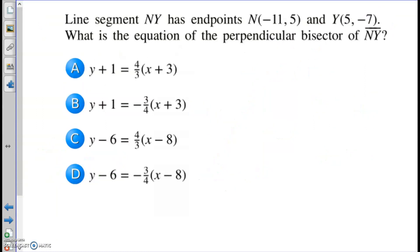Alright, let's do number 12. Line segment NY has endpoints N and Y. What is the equation of the perpendicular bisector of NY? So perpendicular bisector. Now, first of all, you may notice this notation. These are all in point slope notation. y minus y₁ equals m parentheses x minus x₁. So first of all, perpendicular, whatever the slope of NY is, it's going to be perpendicular to that.